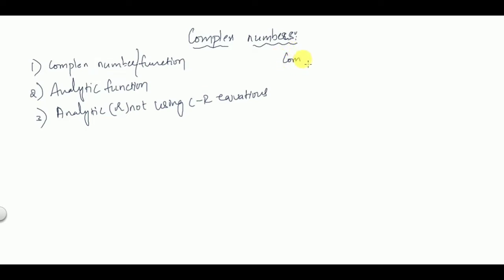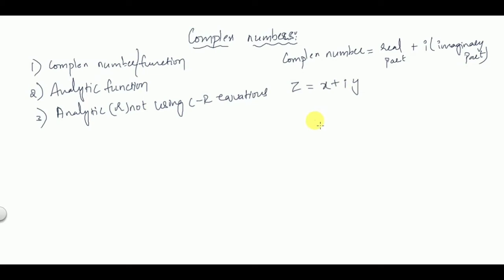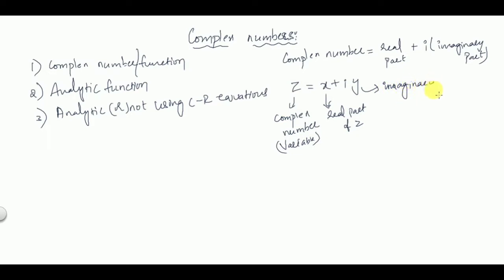So what is a complex number? A complex number consists of both a real part plus i into imaginary part — it is a combination of both. In Cartesian form it is represented by z = x + iy, where z is called the complex number or complex variable. x is the real part of z and y is the imaginary part of z. i² = -1, that is i = √(-1).